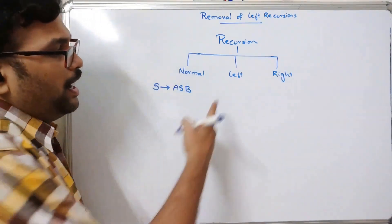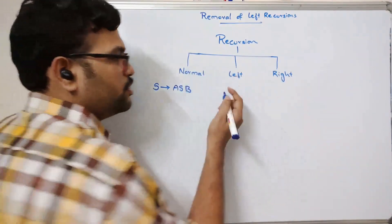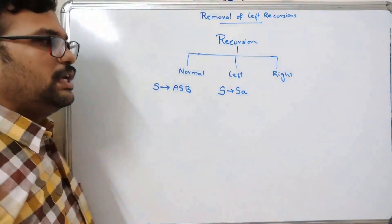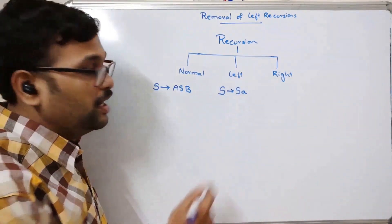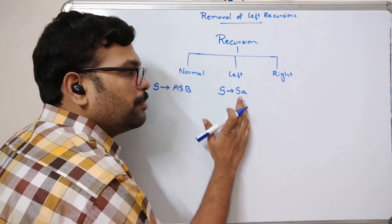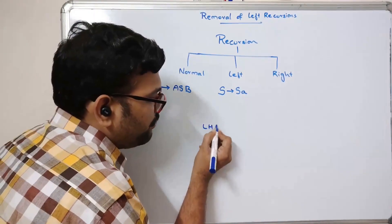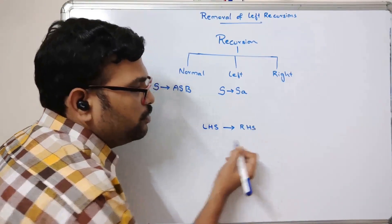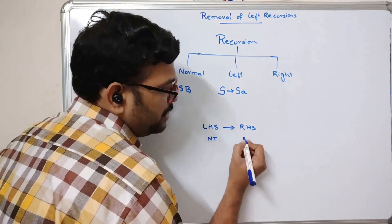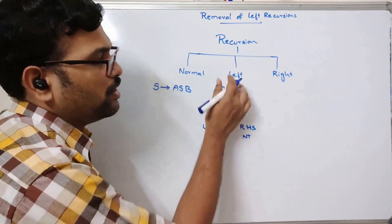Coming to left recursion: if the non-terminal is at the leftmost position on the right-hand side, it is called left recursion. For example, if the production is in the format A → Aα, the non-terminal A appears on the right-hand side at the leftmost position — the same non-terminal that is on the left-hand side. This is called left recursion.